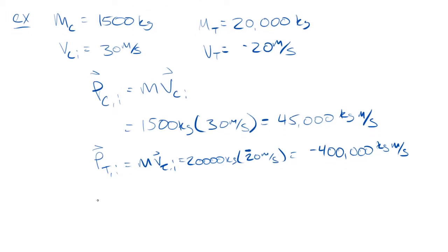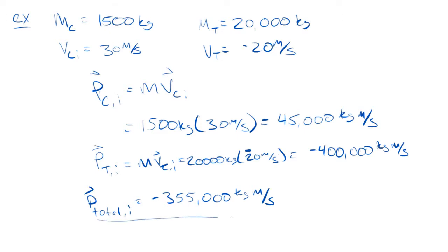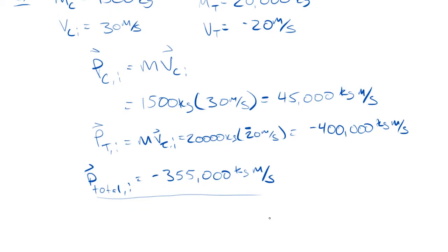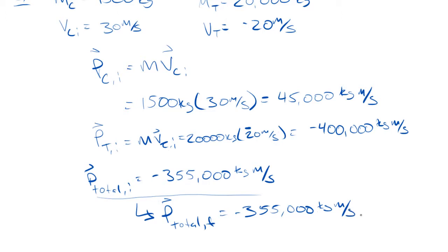The total initial momentum, P_total_initial, is just adding those two numbers together — the negative sign makes a difference since it's a vector — giving negative 355,000 kilogram meters per second. In this example, we're ignoring friction, and there are no other external forces. So the total initial momentum must equal the total final momentum. No net external forces.